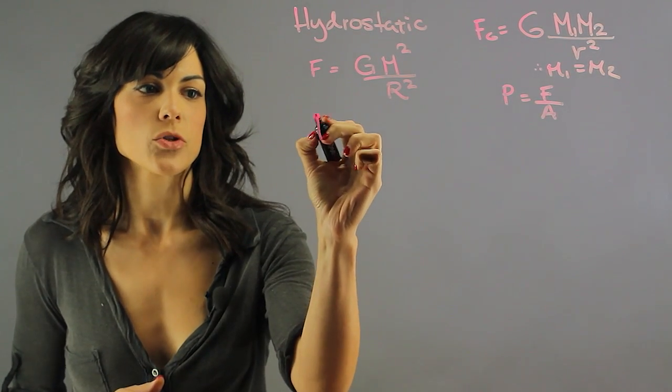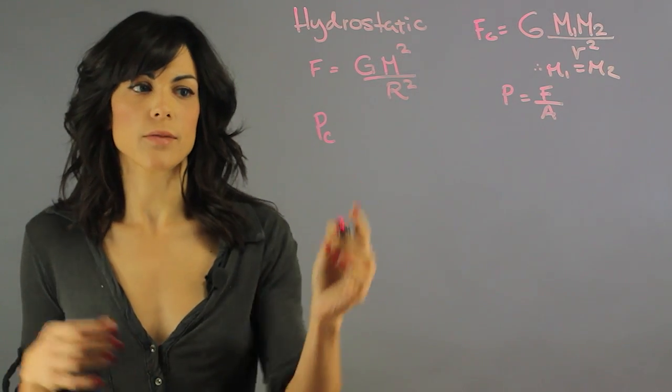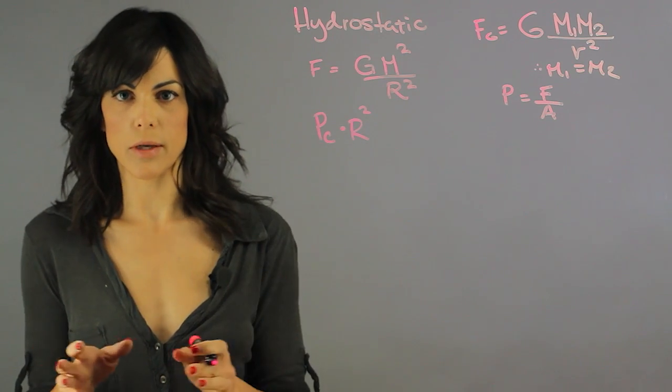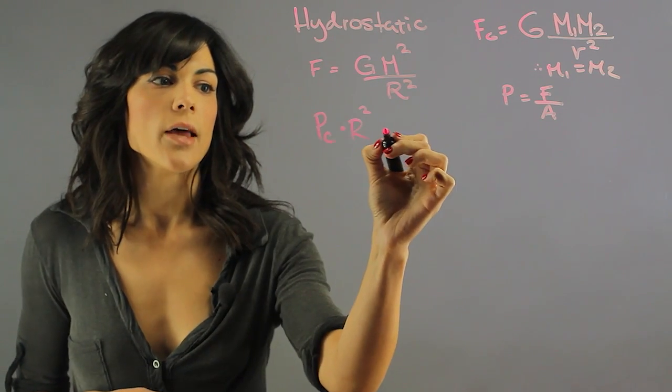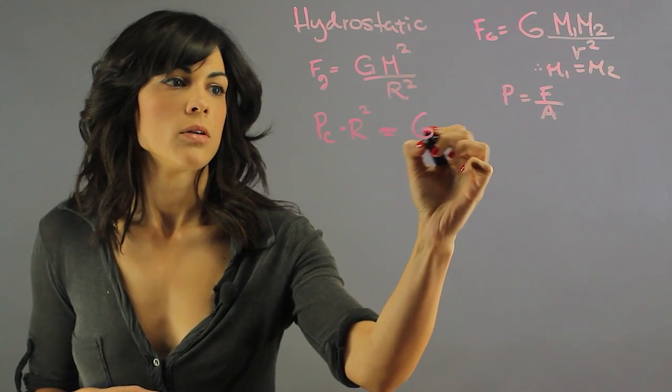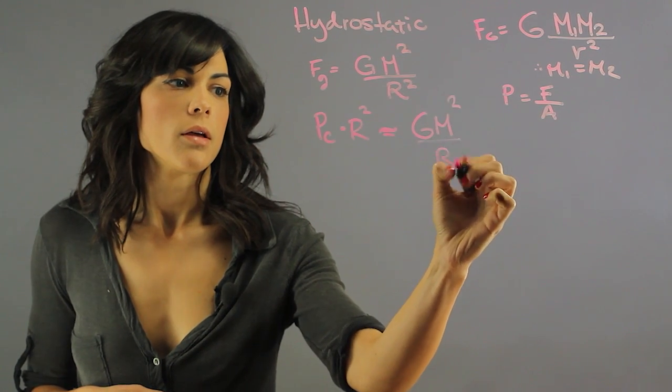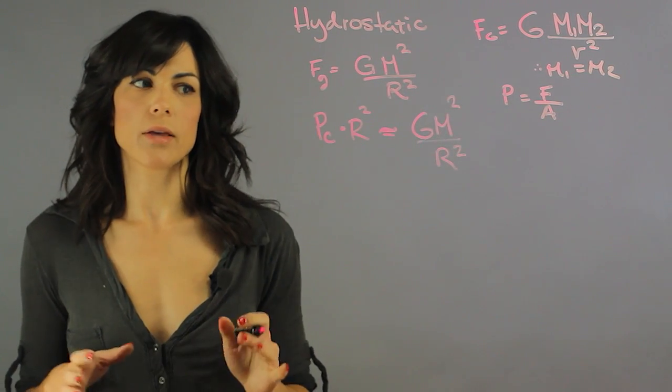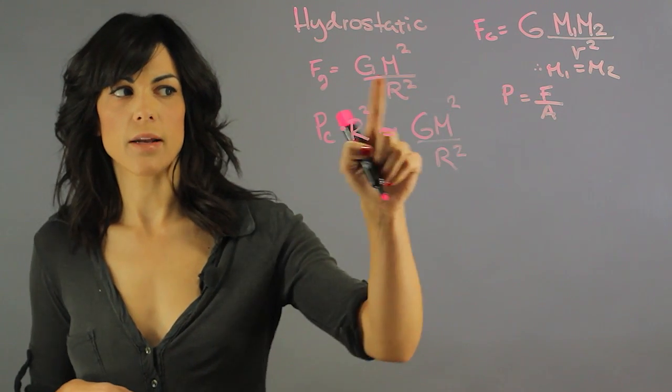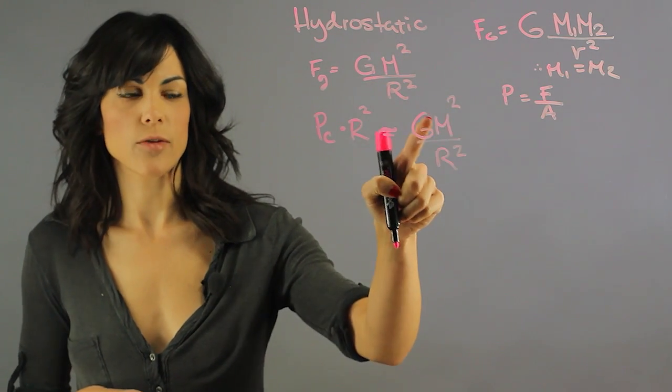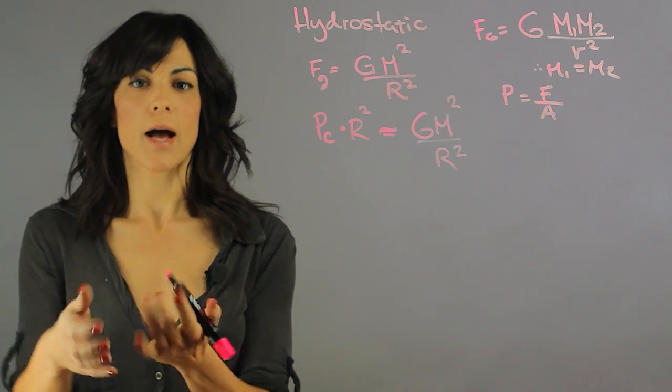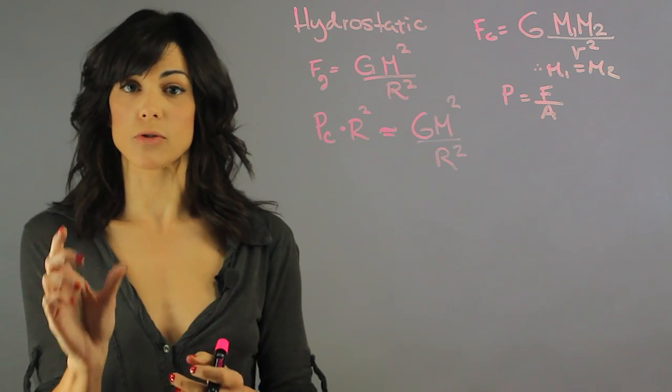So if we take the central pressure of the Sun and multiply by the radius of the Sun squared, which is in the units of area, we're forgetting the pi factor here, and we make it equal to approximately this gravitational force. Now we end up with some sort of balance. We have the right units. If we multiply this pressure by an area, we have a force, and that's going to be the force from pressure. And if we make it equal to the force of gravity, they should be equal if they're in hydrostatic equilibrium. As I said, the reason that the star is not collapsing is because these two are equal.